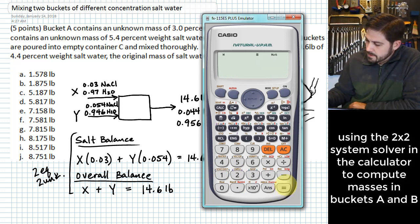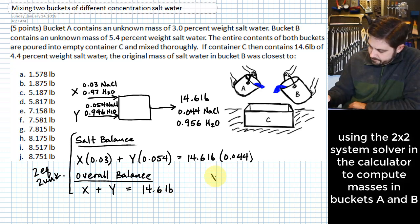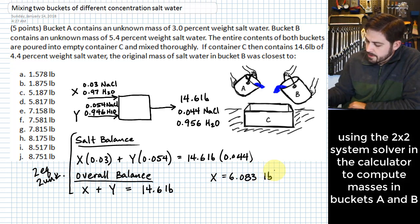Okay once we have all those put in there we can hit equals and the first value that you see there will be 6.083 and that will be in units of pounds. And if you think about what that was that was actually our bucket A.